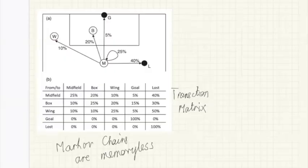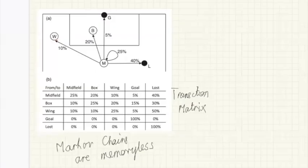There's one more thing I want to say about this type of representation, because it's a little bit like a computer game — a sort of very naive football manager game from maybe the 1980s — where the ball bounces around according to this transition matrix.